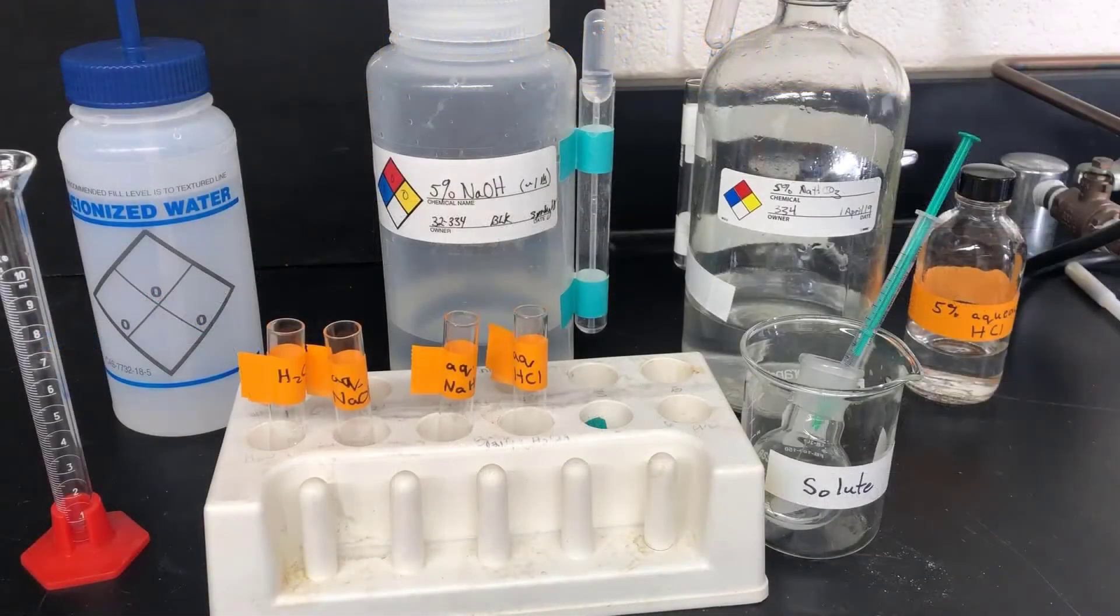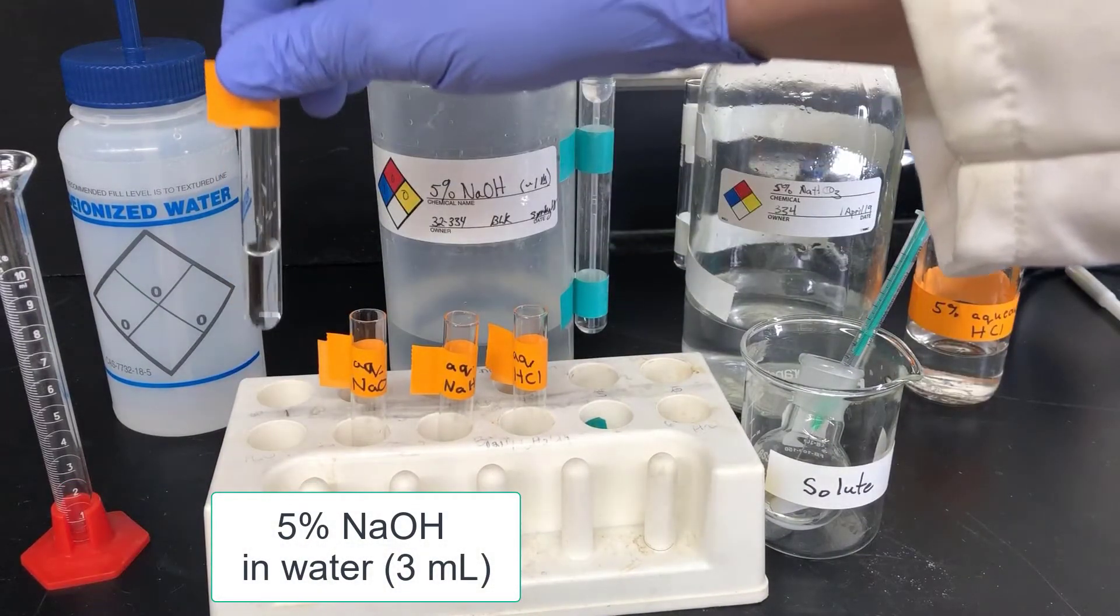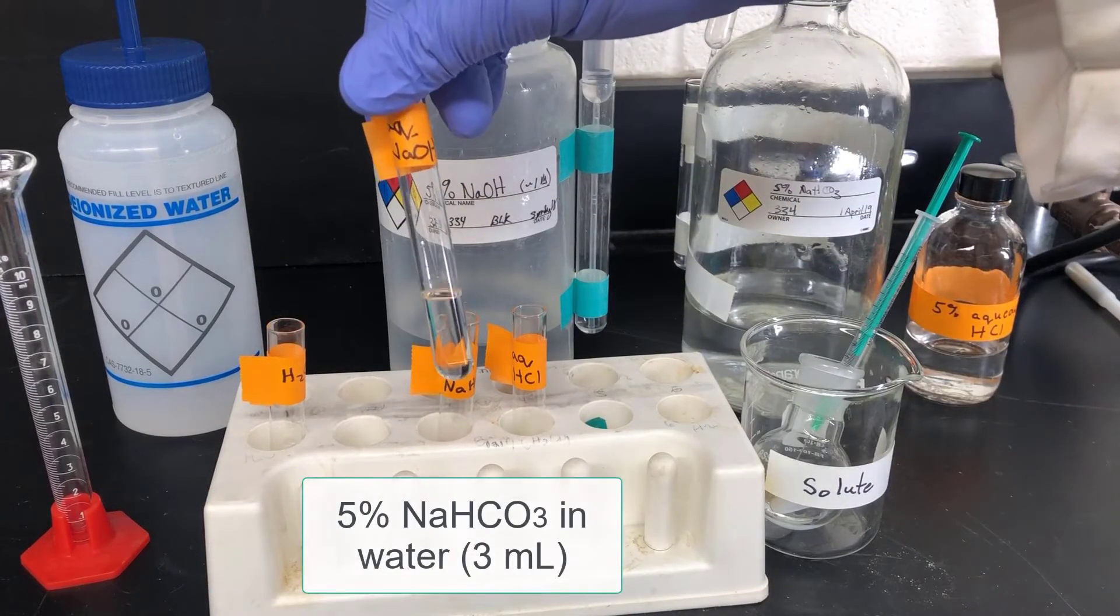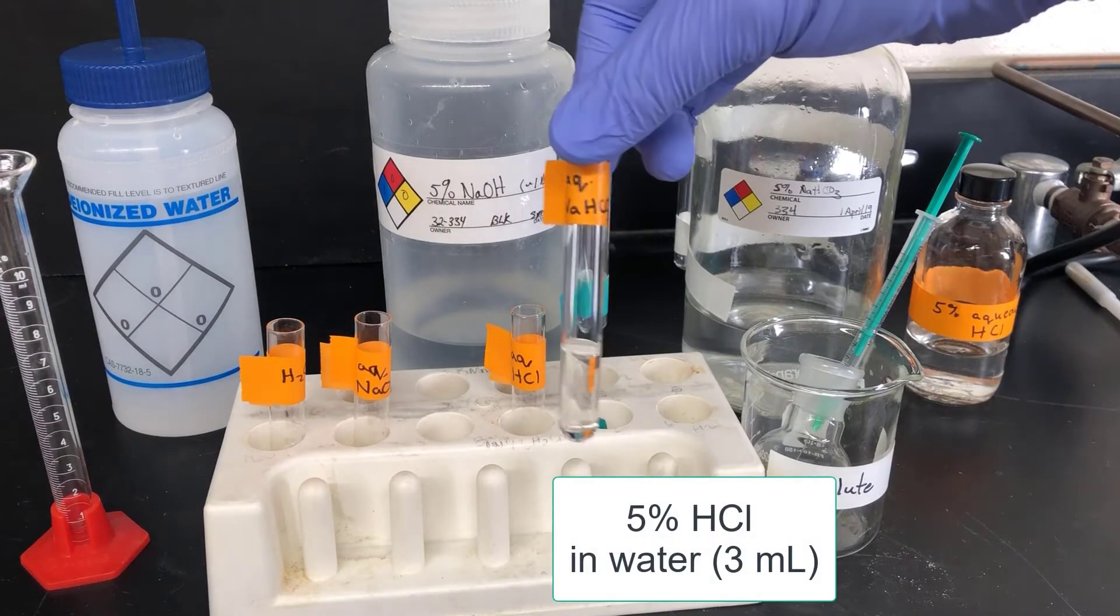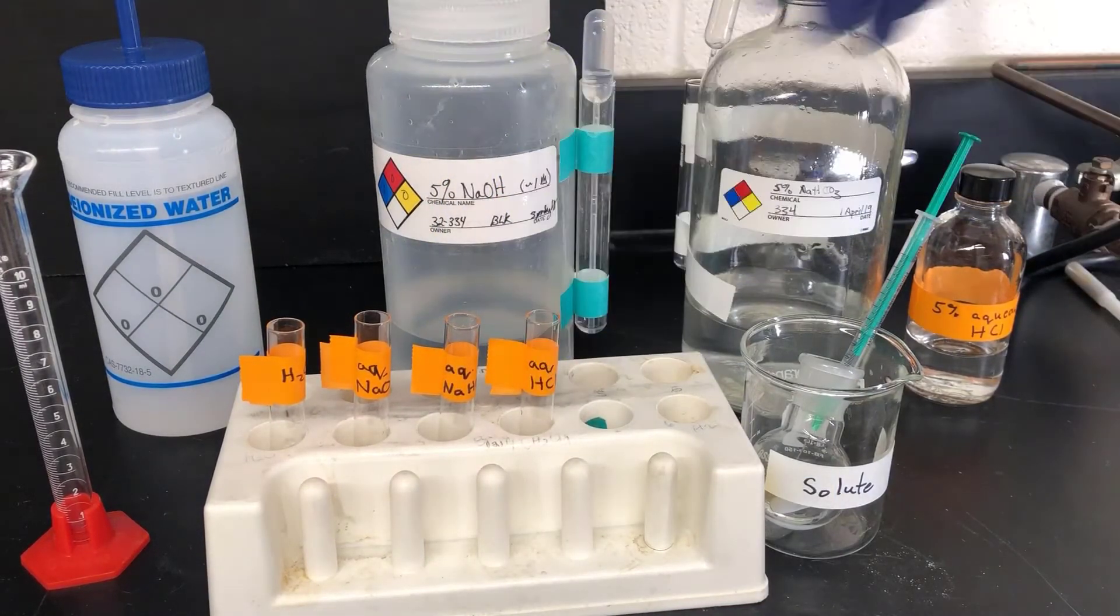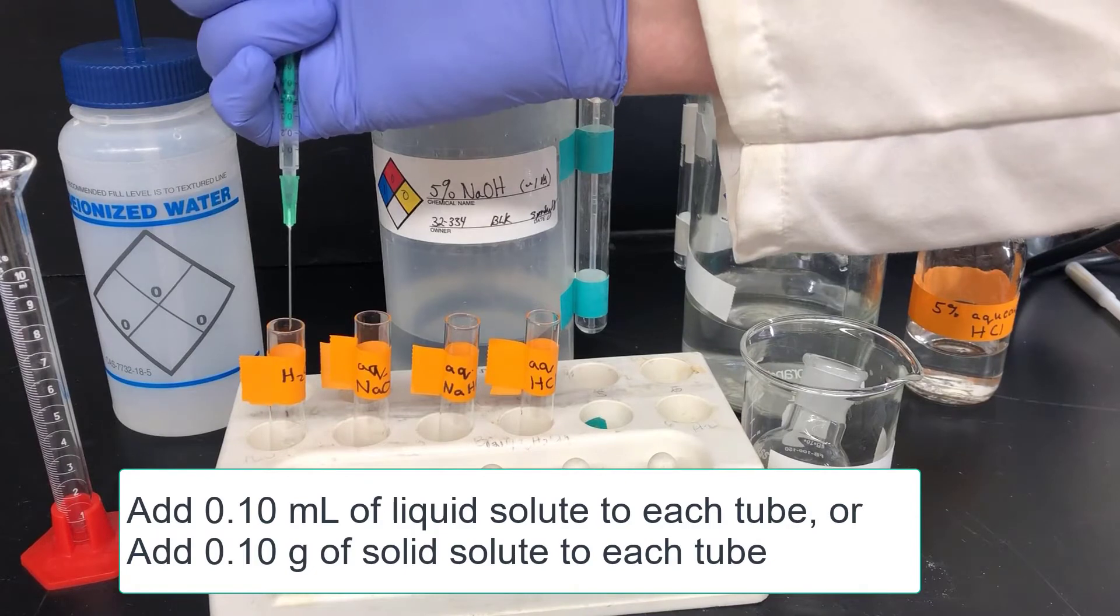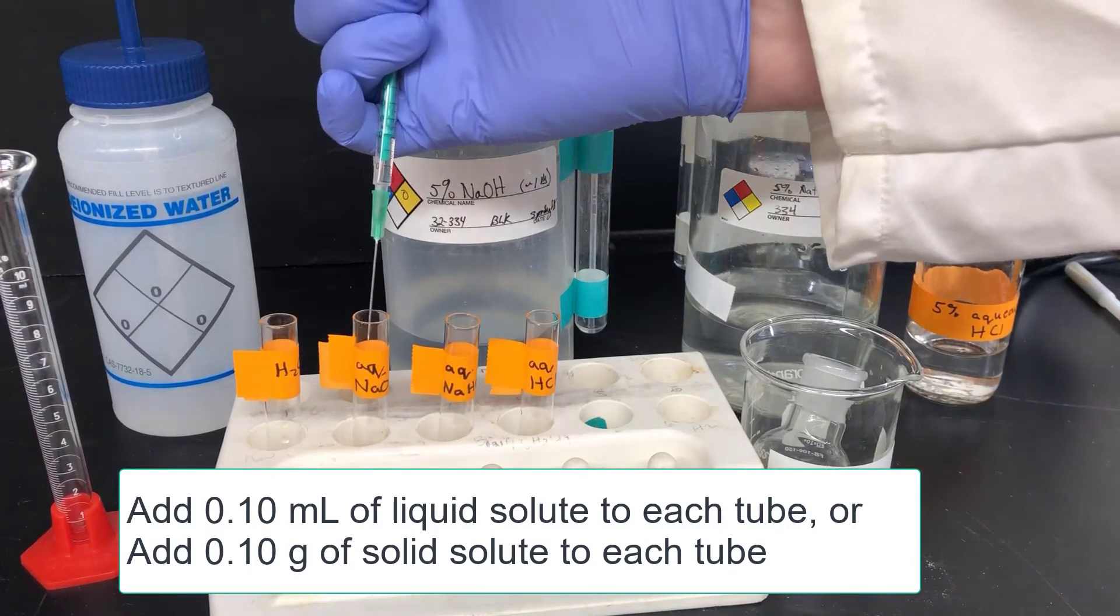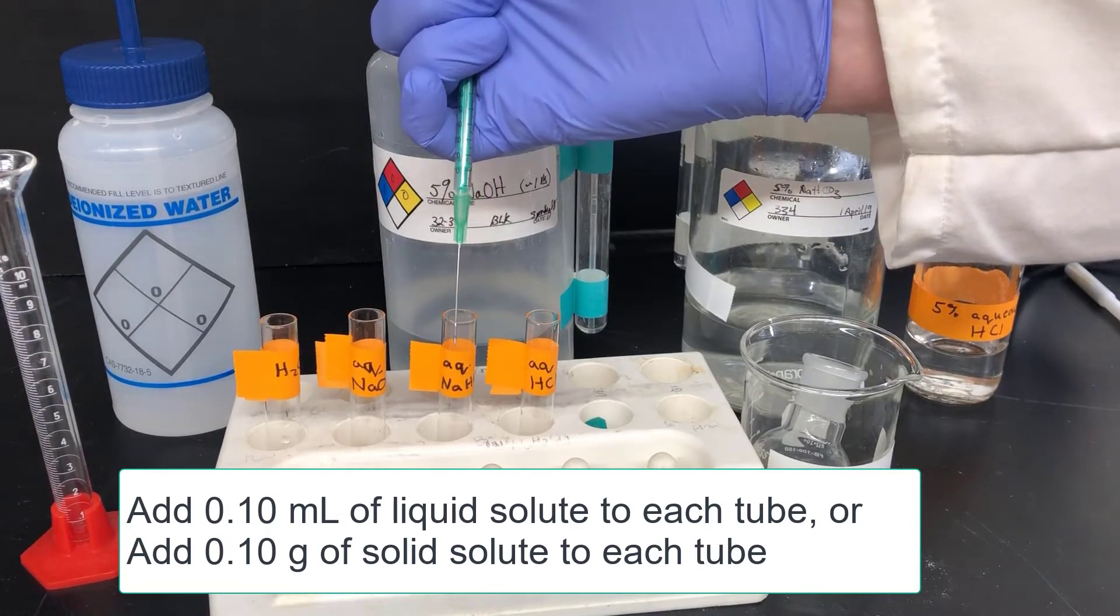I have four aqueous solutions here. Deionized water, which I put in this test tube. 5% aqueous NaOH, sodium hydroxide, a strong base, in this test tube. 5% sodium bicarbonate, NaHCO3, a weak base, in this test tube. And 5% HCl, the strong acid. I've got three milliliters of each of these solutions in these various test tubes, and I'm going to be adding 0.1 milliliters of solute to each one, shaking it up, and seeing if it dissolves. I'm dispensing 0.1 milliliters of the liquid solute using a syringe and needle. If I'd had a solid, I'd measure out 0.10 grams of solid solute and add that to each test tube.